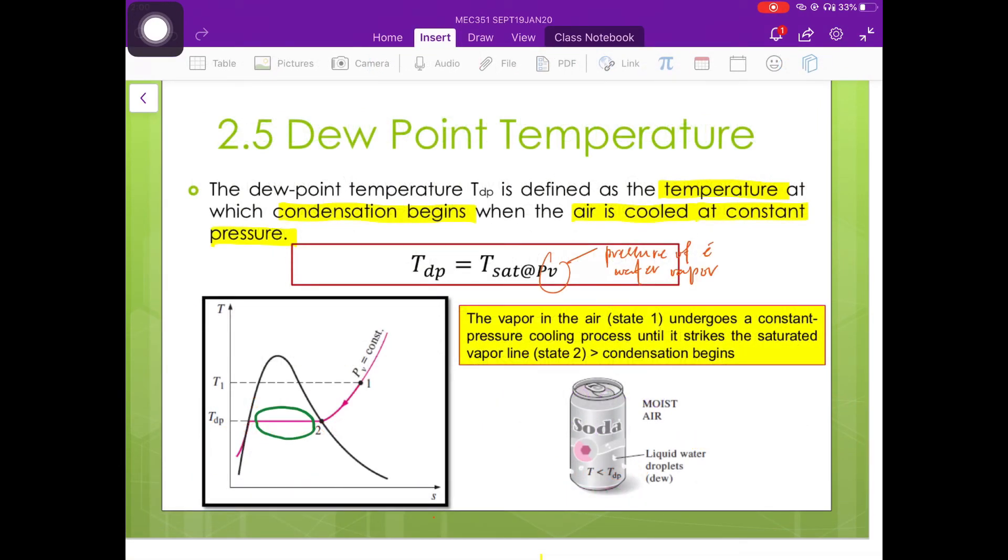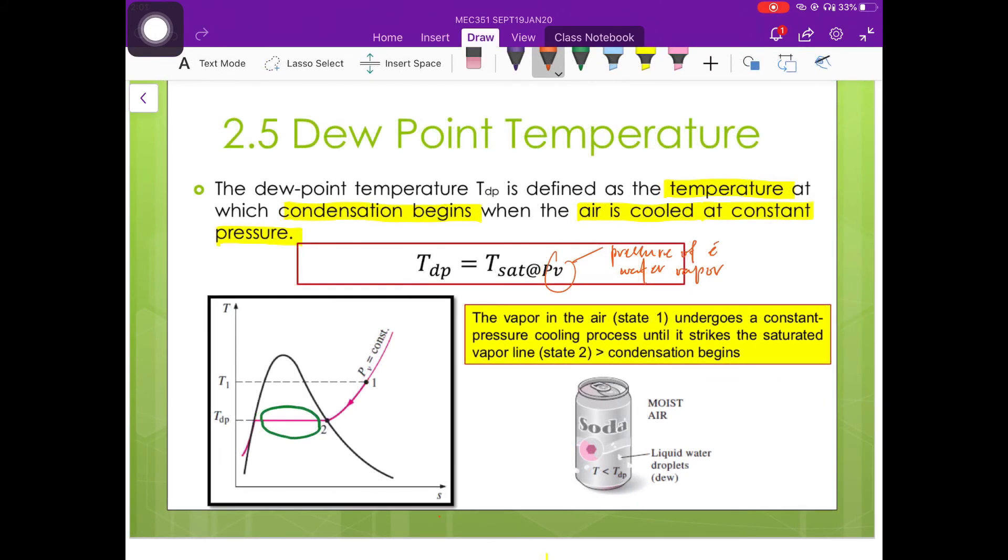If we look back at the definition of dew point temperature which is the saturation temperature at the partial pressure of the water vapor which is representing the atmospheric air condition, which means that something colder than our dew point temperature will create further cooling process levels to the atmospheric air surrounding the cooling.